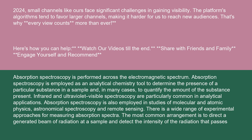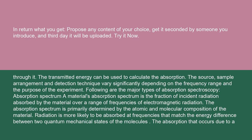There is a wide range of experimental approaches for measuring absorption spectra. The most common arrangement is to direct a generated beam of radiation at a sample and detect the intensity of the radiation that passes through it; the transmitted energy can be used to calculate the absorption. The source, sample arrangement, and detection technique vary significantly depending on the frequency range and the purpose of the experiment.